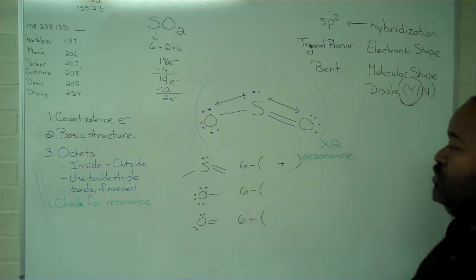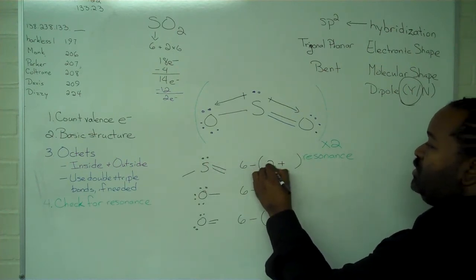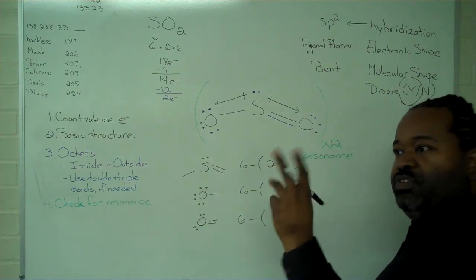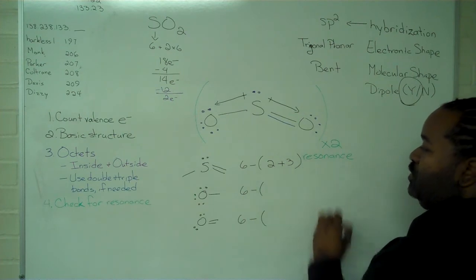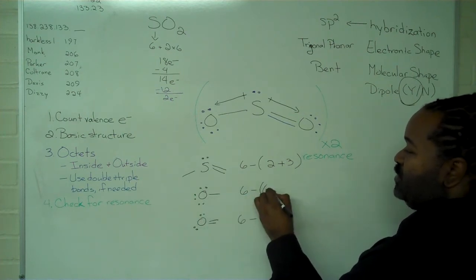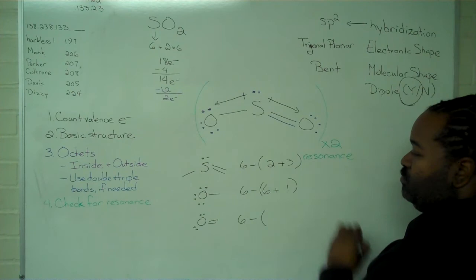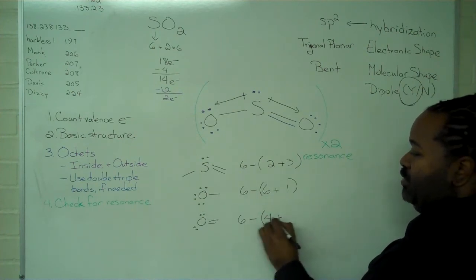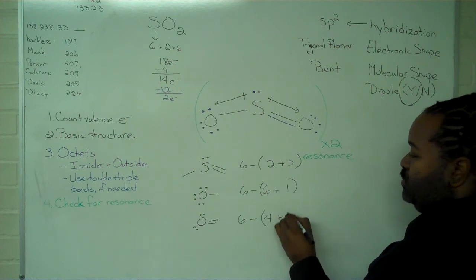And so in this case, we have 2 that are being unshared. We have a total of 6 that are being shared. And if we assume a 50-50 split, then that's 3. Here we have 6 that are not being shared, and we get 1 from splitting that bond. We have 4 that are not being shared, and we can expect to pick up 2 here.